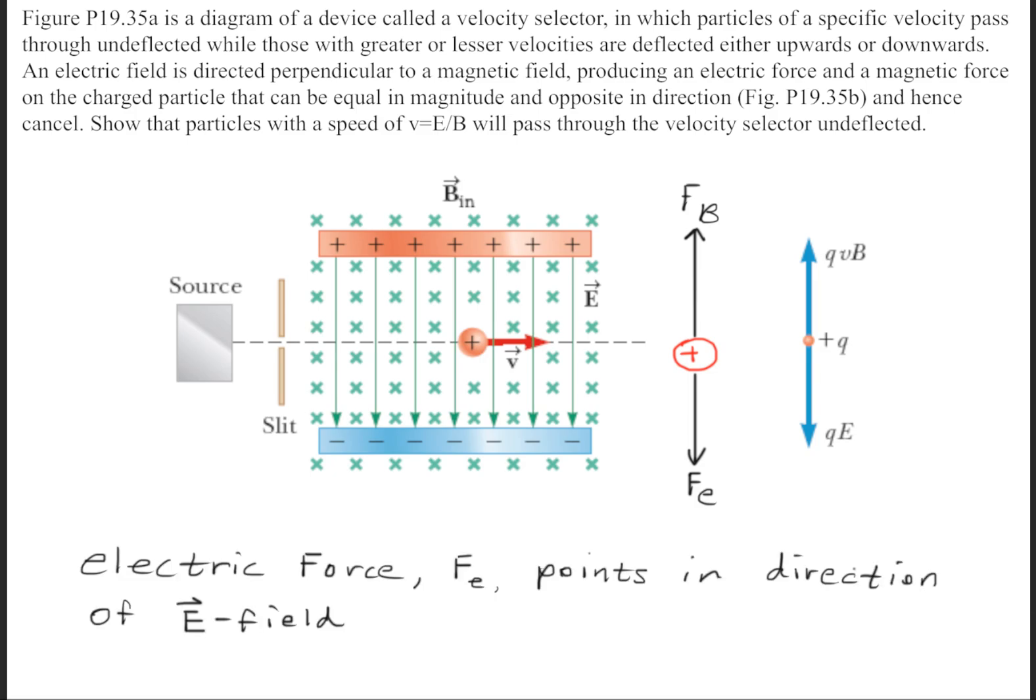So once again, to reiterate why the electric force is pointing down: when you have an E field such as this acting on the charged particle going through it, it'll be attracted to the negative portion.